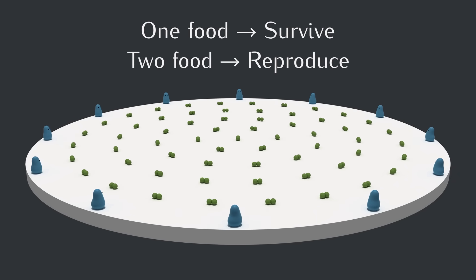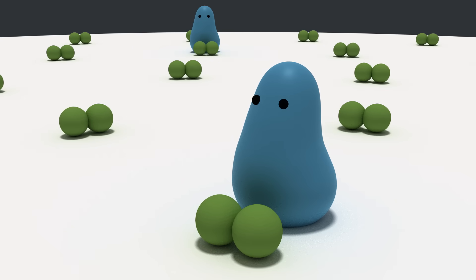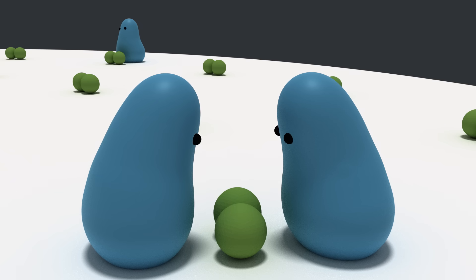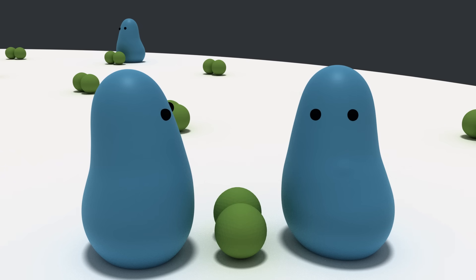What's different in this simulation, though, is that food will come in pairs. Each creature randomly picks a pair of food to walk to, so it might get the pair all to itself and get to go home with two food and then reproduce, or another creature might find the pair at the same time. And when this happens, they have to somehow figure out how to split things up.